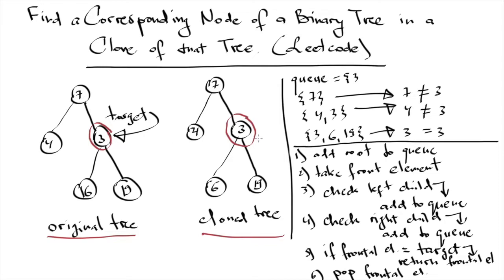We are going to solve this problem using BFS. So if our target is equal to three, we have to return this node reference. We use a queue — initially the queue will be empty, then we add the root of the original tree, which is seven. After adding seven, we pop out the front element, which is seven, and look at its children: four and three. We add four and three to the queue.